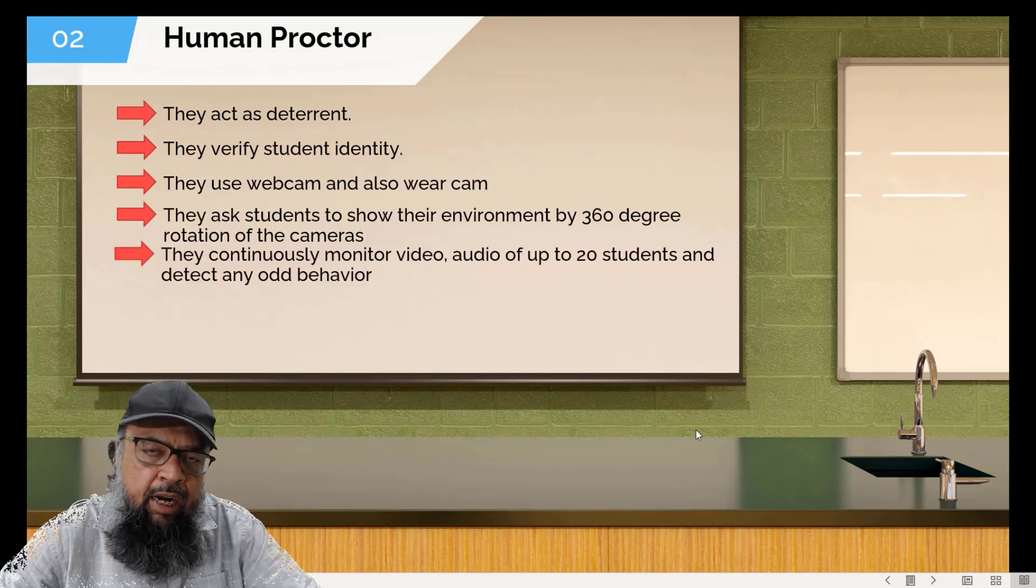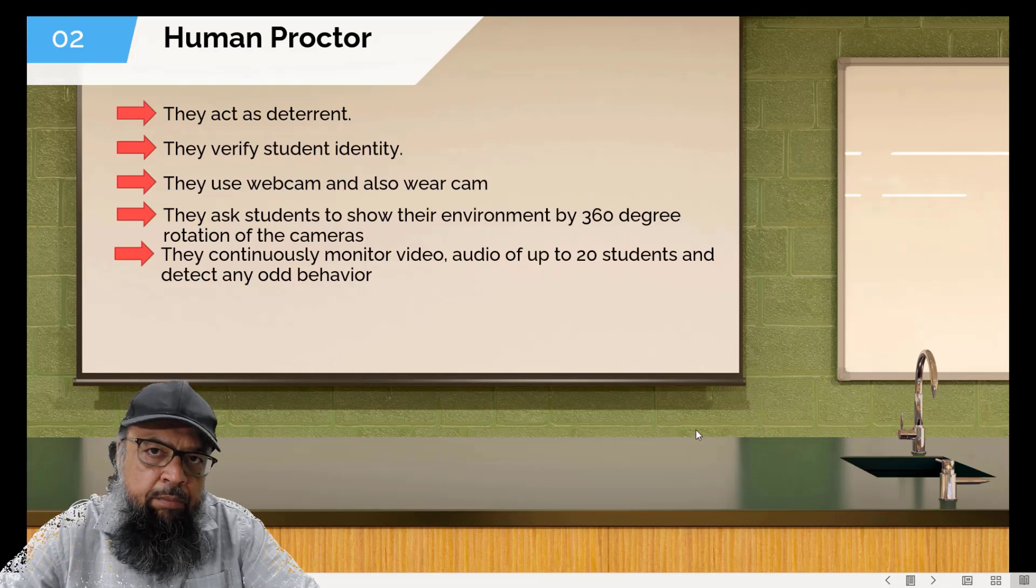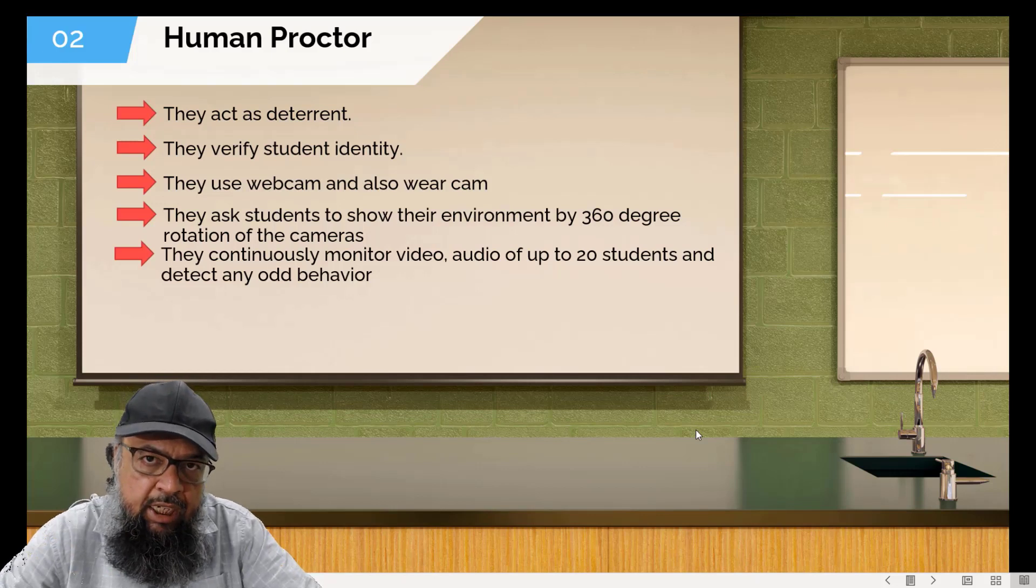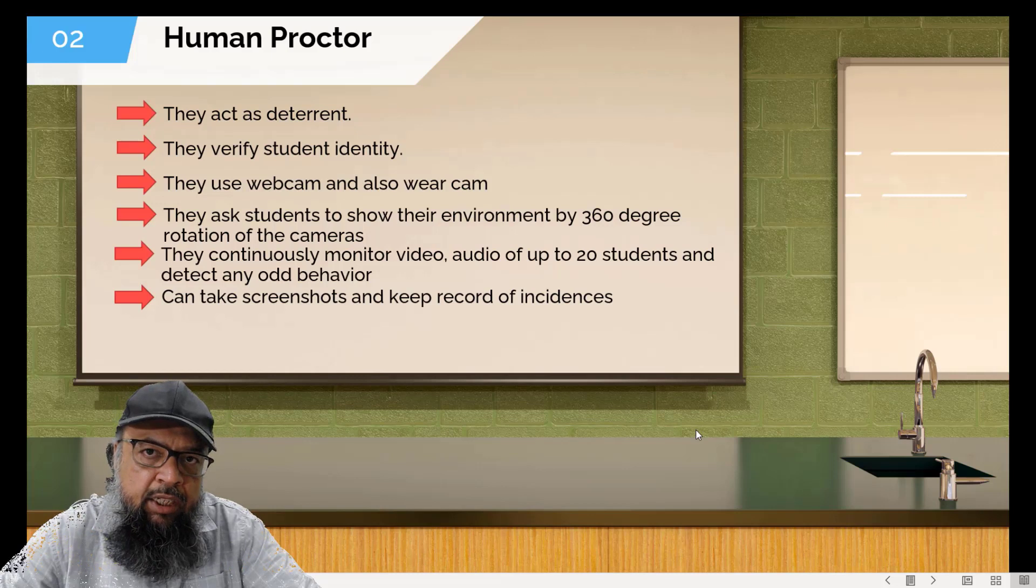And then during the exam, they continuously monitor the students using two cameras. And at one time, a human test proctor can monitor around 20 students, and they try to find any odd behavior: is there any person in the room, whether the students are focused on their screens or not. Then they can also take screenshots and keep records of the things happening.